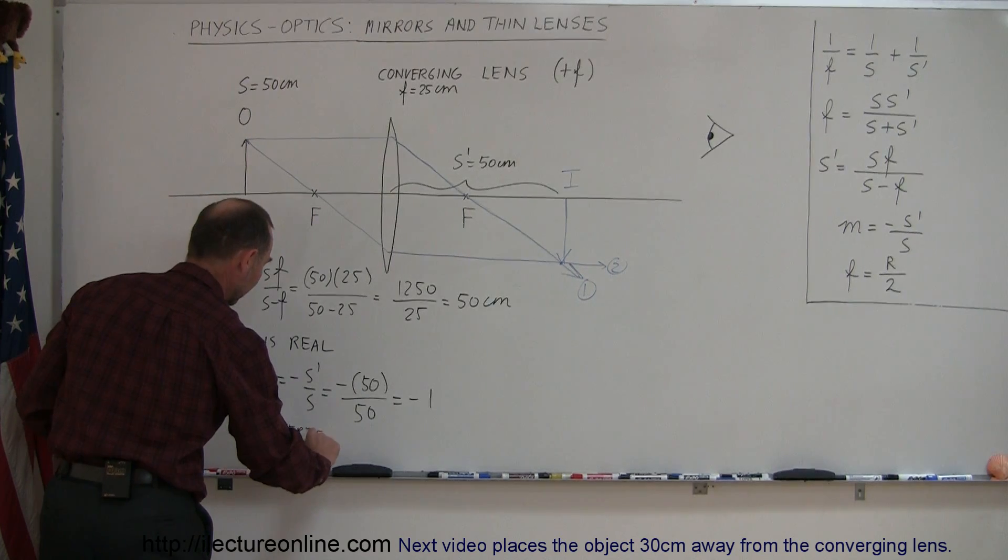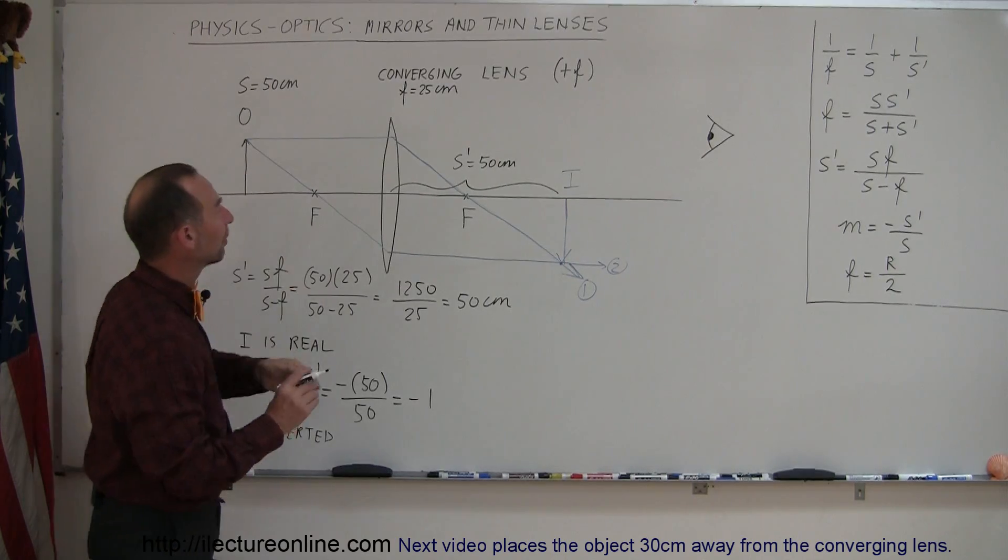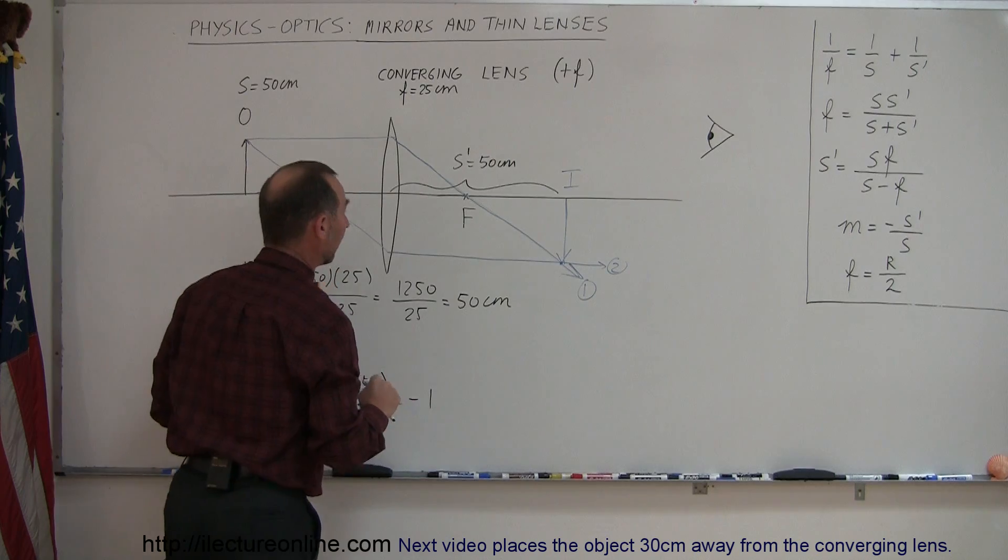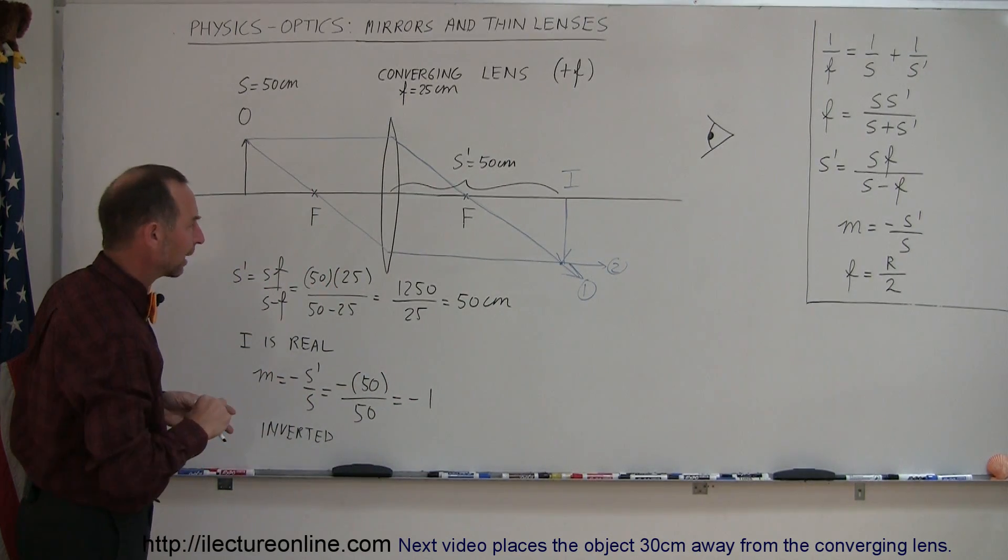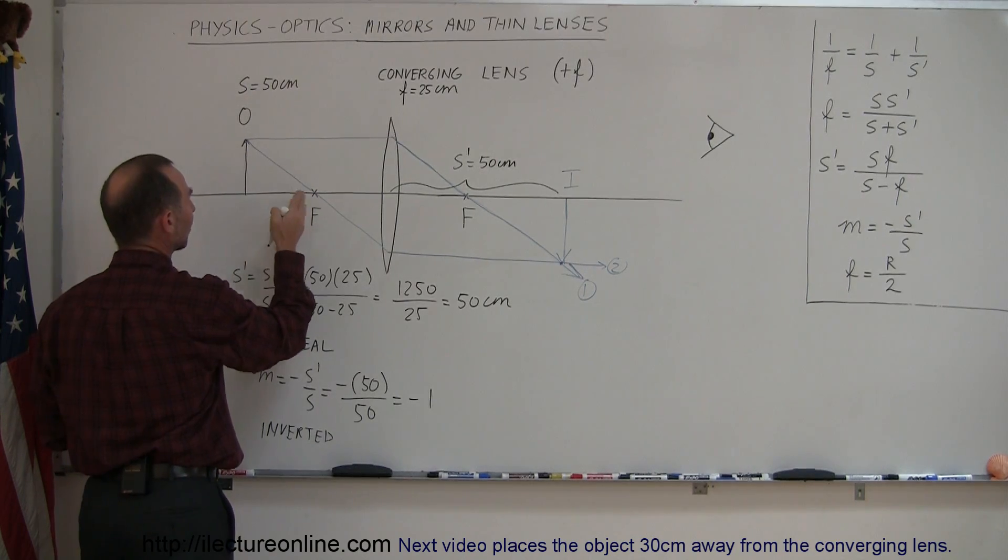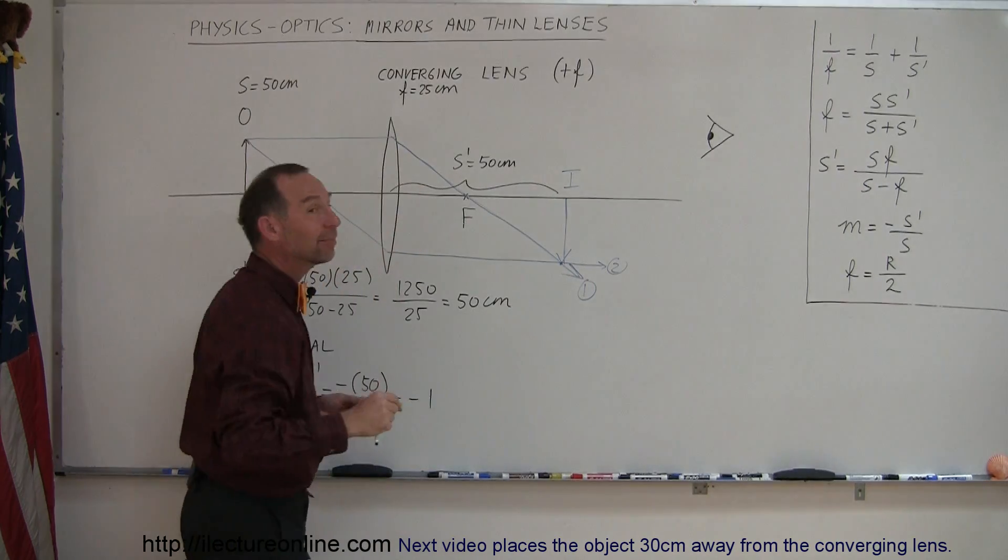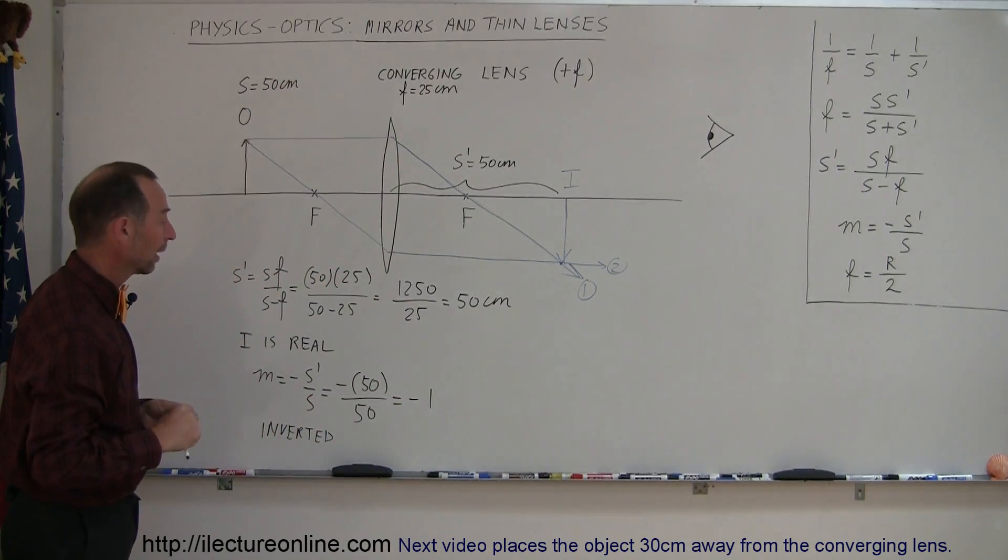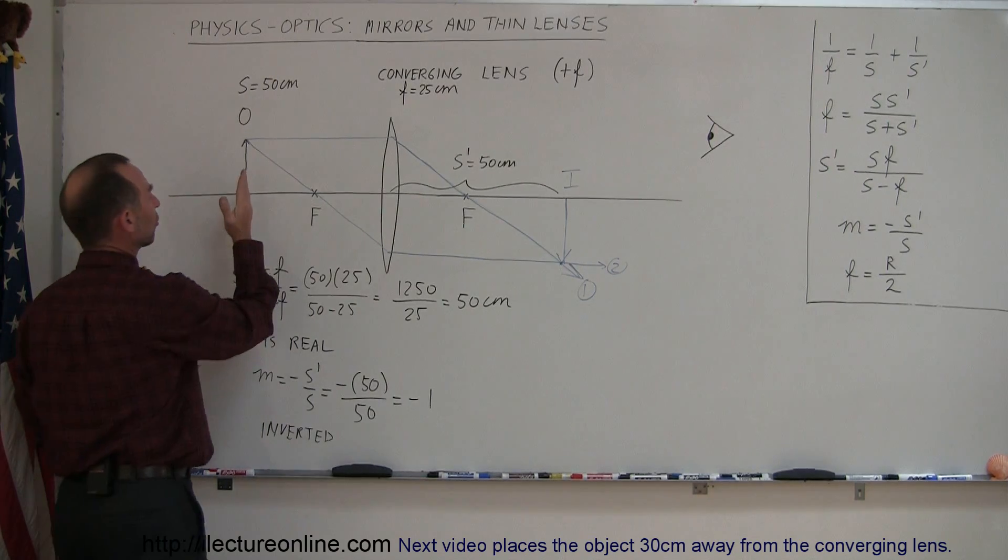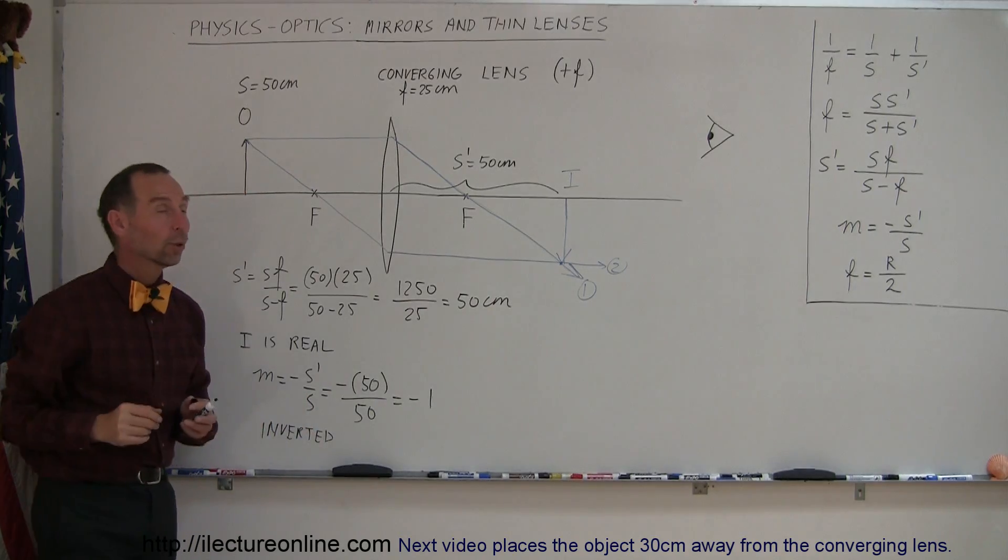So, here you can see the case. Remember, in the previous example, when we put the object far away from the lens, the image formed very close to the focal point, and that's important in future applications, so remember that. Now, we see that when we place the object distance exactly twice as far away as the focal point, then the image forms on the other side, the same distance away from the lens. It's upside down, magnification is 1, and it's inverted. So, now we're going to continue showing some examples by moving the object closer to the lens and see what happens next.